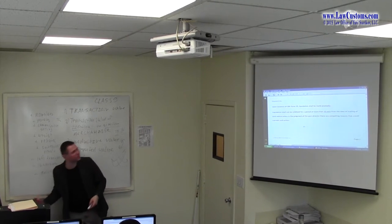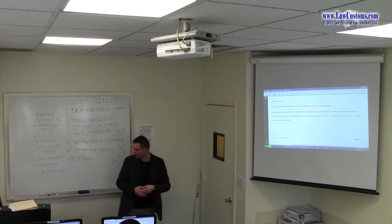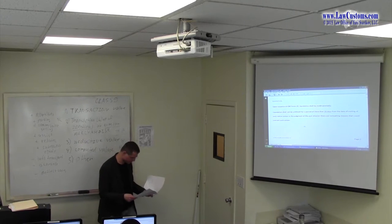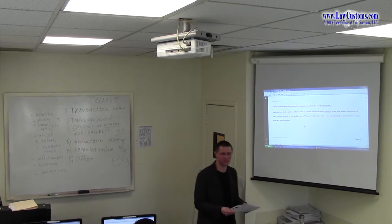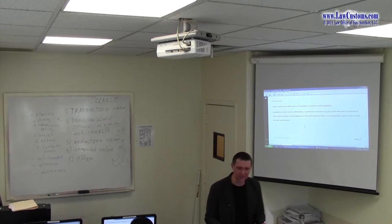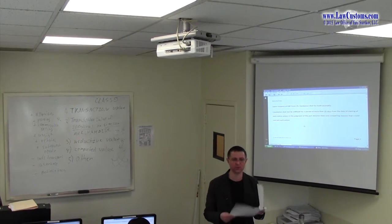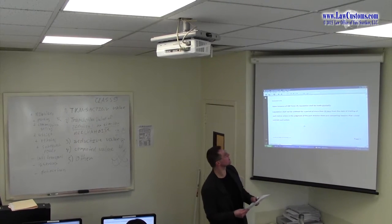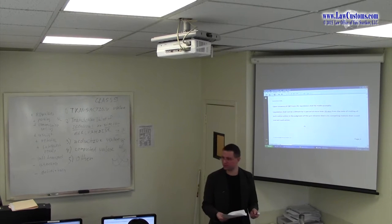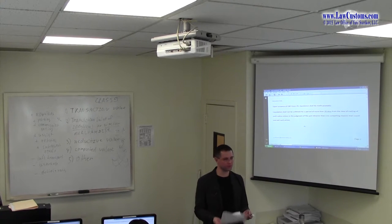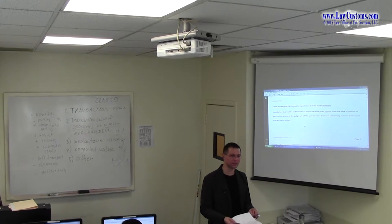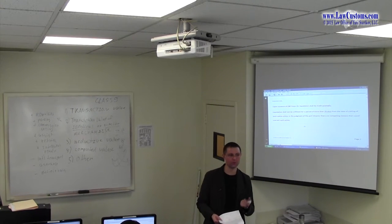Liquidation. We talked about liquidation already. Liquidation is found in part 159. In part, write down part 159. It's for liquidation. And liquidation is defined as final computation of duties. Once you receive this CBP form 29, customs give you the form, says the duty rate is increased, then customs has short amount of time to liquidate it. Why is that?